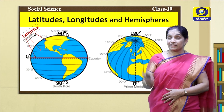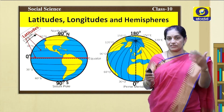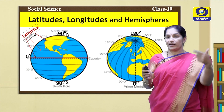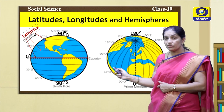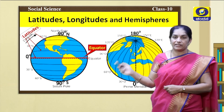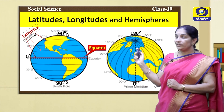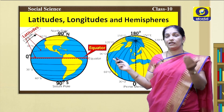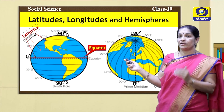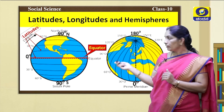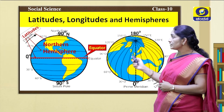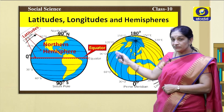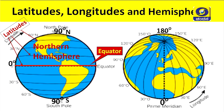The latitudes are measured in degrees. The distance between one latitude to another latitude is divided into 60 minutes. The 0 degree latitude is called the equator. This equator divides the earth into two equal parts and these two parts are called hemispheres. From 0 degree to 90 degree north is called the northern hemisphere, and from 0 degree to 90 degree south is called the southern hemisphere.